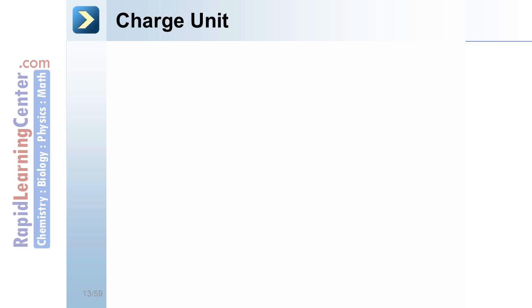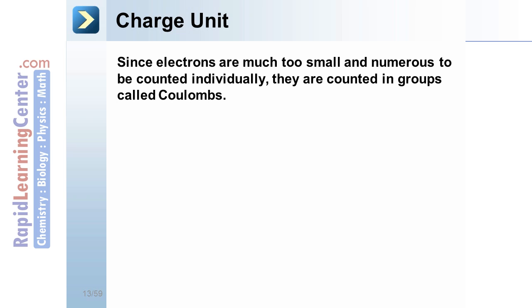Charge unit. Because electrons are very, very small, they're not counted individually. They're counted in groups called coulombs. A coulomb is a group of electrons whose number is 6.25 times 10 to the 18th electrons. That's actually 6.25 billion billion electrons.